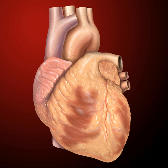In a healthy heart blood flows one way through the heart due to heart valves, which prevent backflow. The heart is enclosed in a protective sac, the pericardium, which also contains a small amount of fluid. The wall of the heart is made up of three layers: epicardium, myocardium, and endocardium.